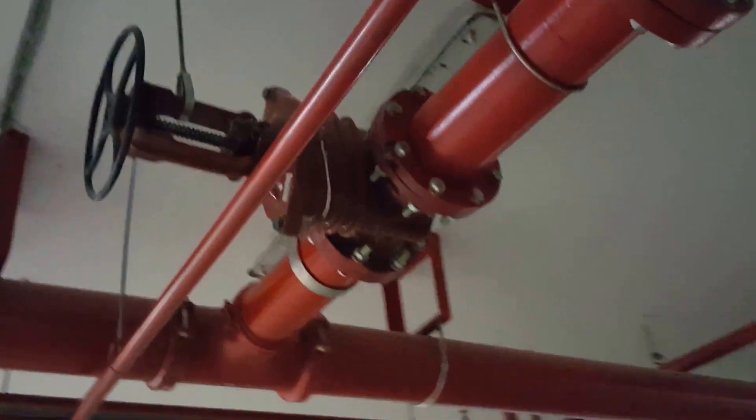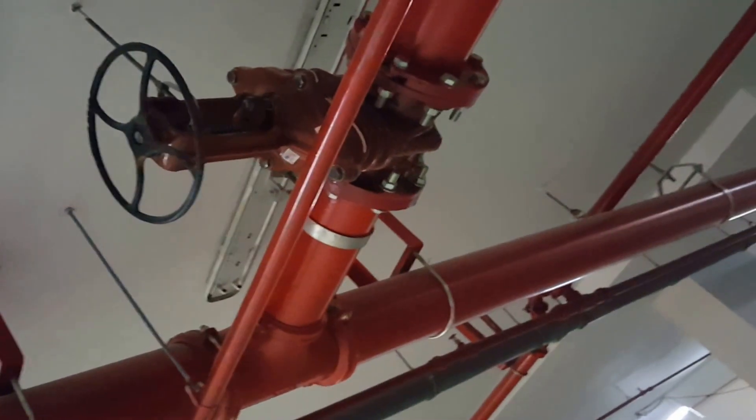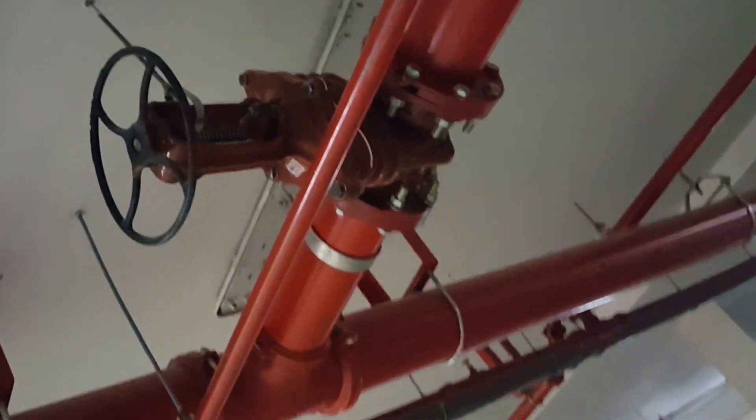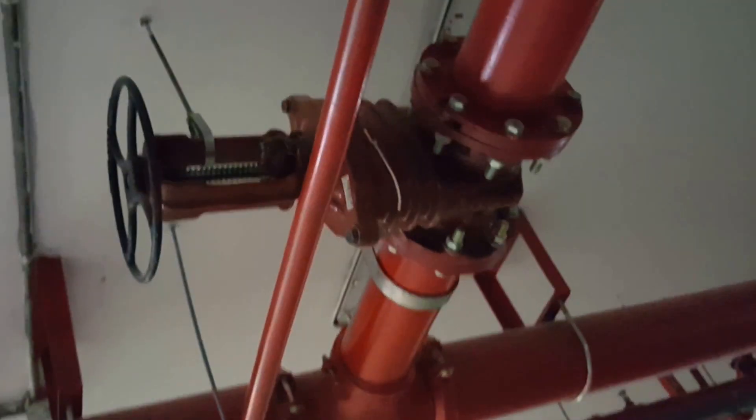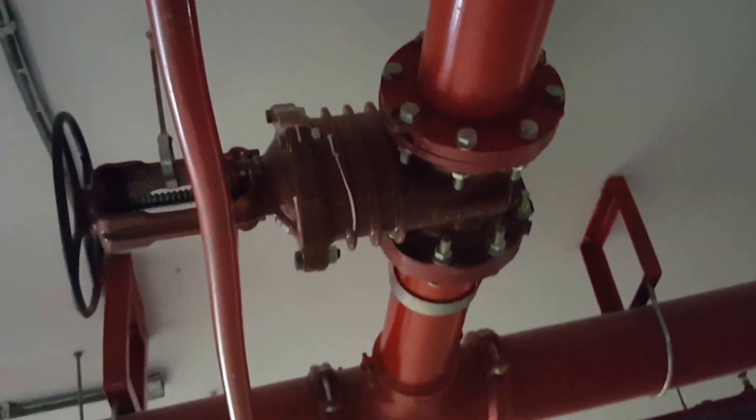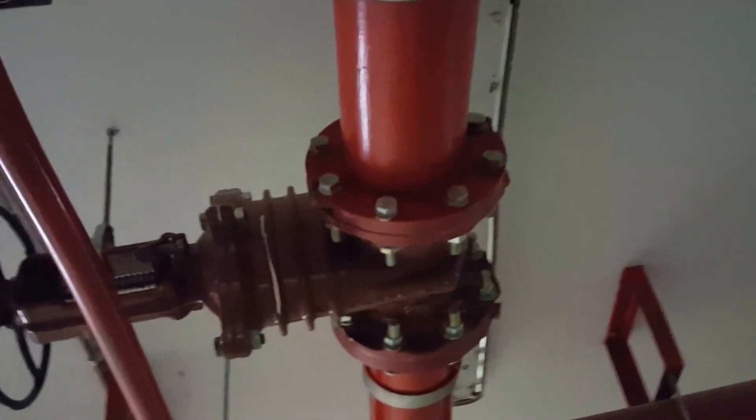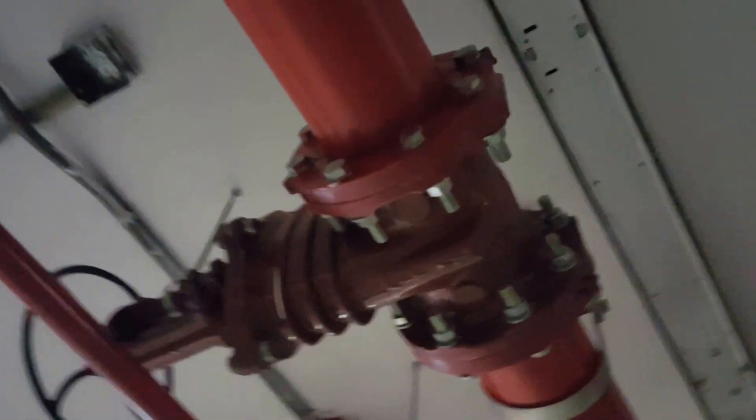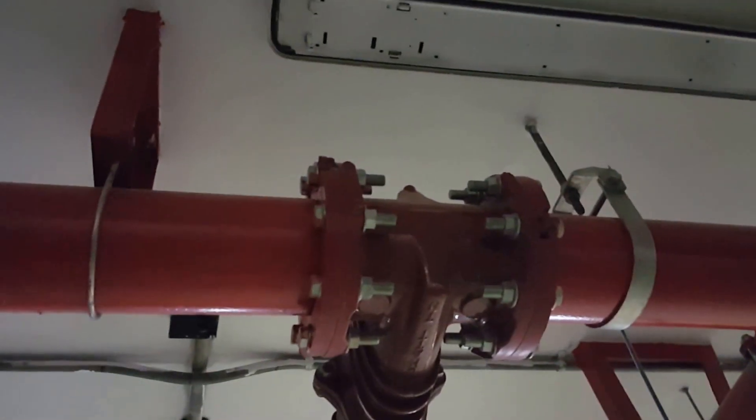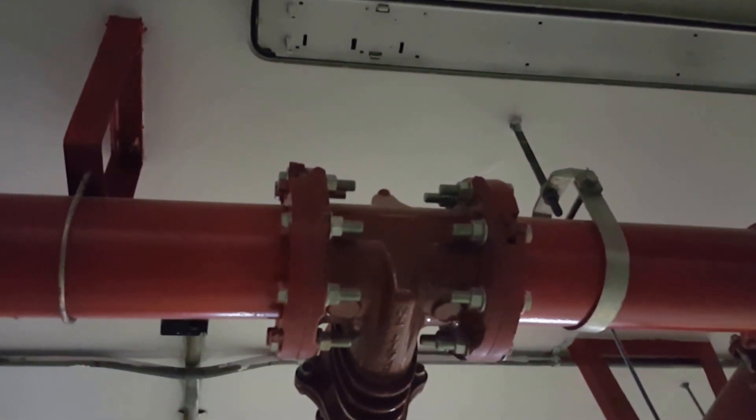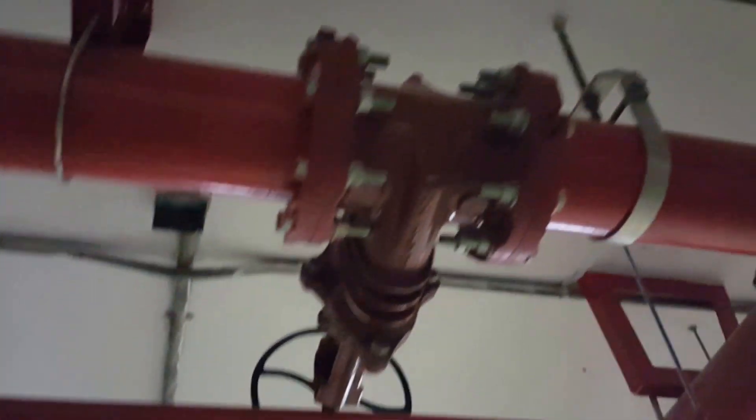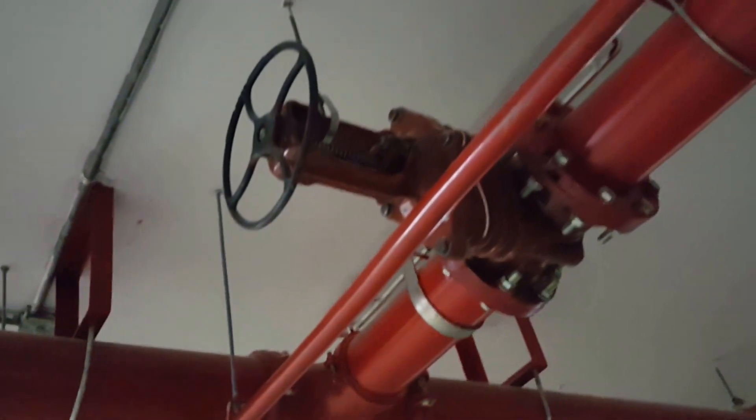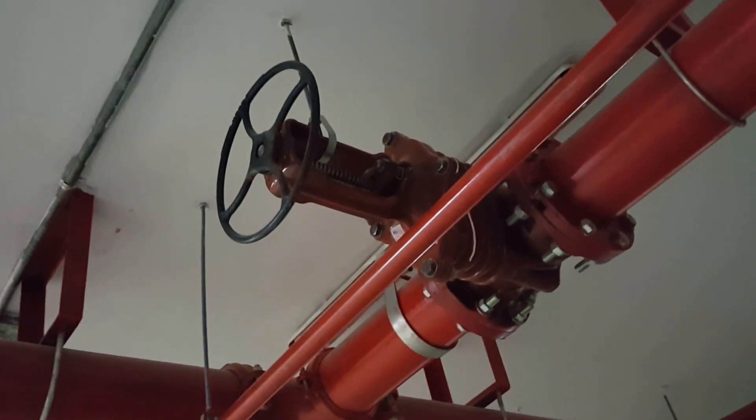See, this is an OS and Y gate valve. This is a flange type, installed with flanges and bolted. See here, this is not threaded or welded, we use bolts. We put the gasket inside and then we bolt this one. This is an OS and Y valve.